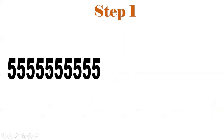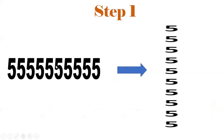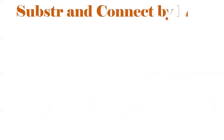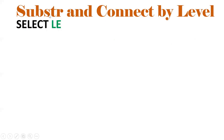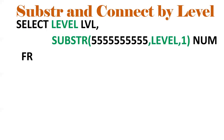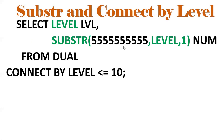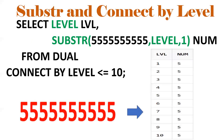Step 1: Convert the string from horizontal to vertical manner using SUBSTR and CONNECT BY LEVEL. CONNECT BY LEVEL handles the looping; SUBSTR extracts part of the string. The query is: SELECT SUBSTR(phone, LEVEL, 1) FROM DUAL CONNECT BY LEVEL <= 10, because the length is 10 characters. Each iteration extracts one character — first call gets position 1, second gets position 2, and so on — giving us each digit as a separate row.